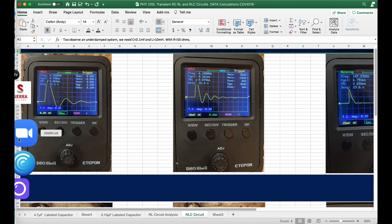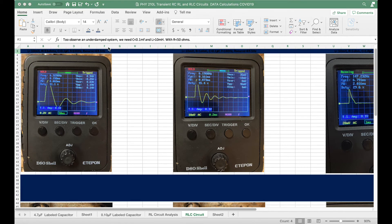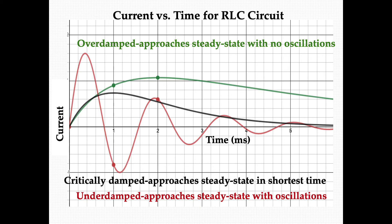This is a graph of really the solutions I talked about. I didn't talk about the third solution yet. This is the graph of the current as a function of time for the RLC circuit.